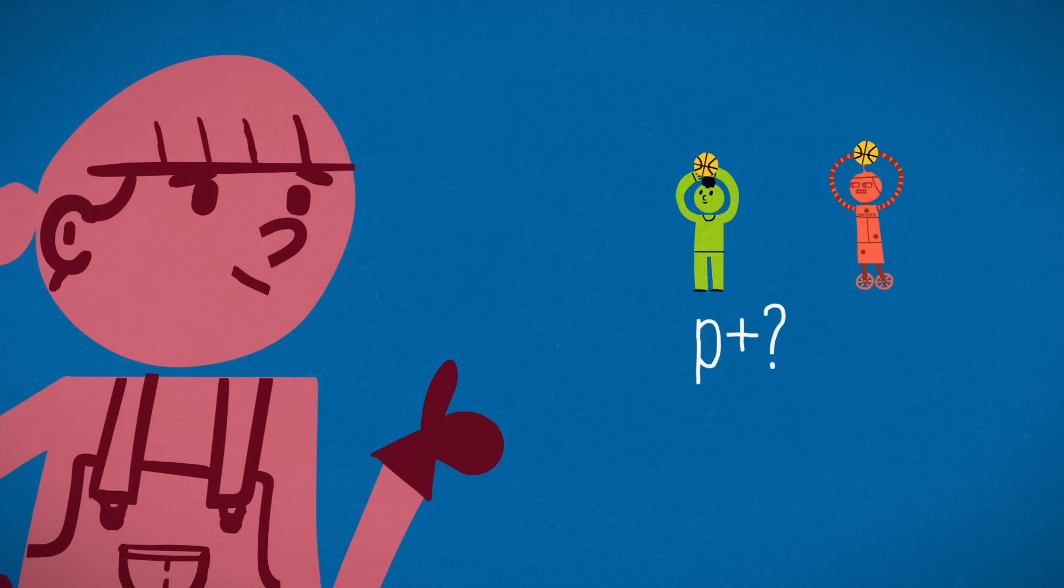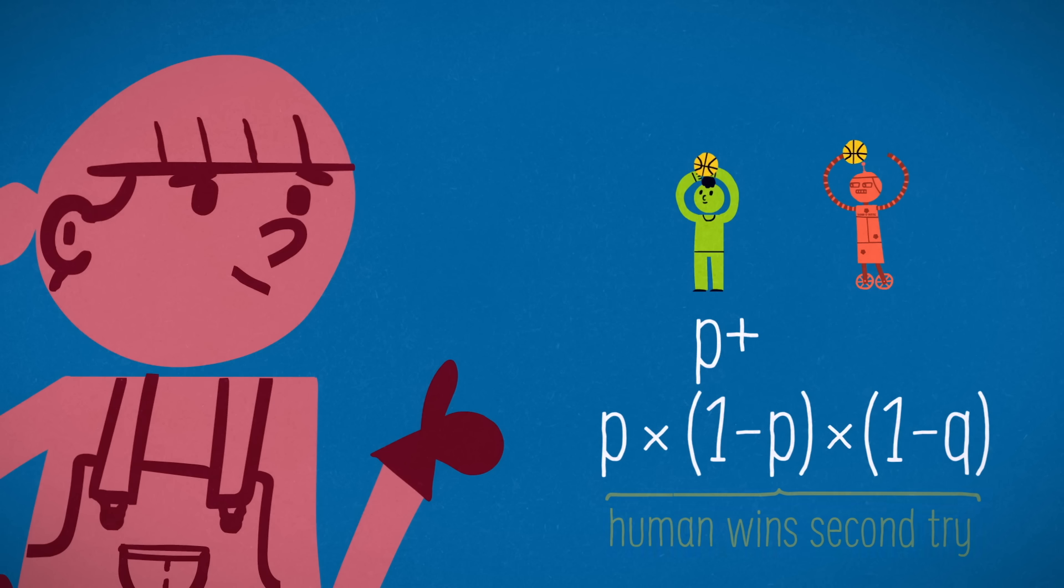What's the probability that they win on the second try? That attempt only happens if both players miss. The probability of a miss is 1 minus the probability of a success. So the miss probabilities are 1 minus P and 1 minus Q. The chance of both happening is the product of those values. So the probability of two failures and then a human success is P times 1 minus P times 1 minus Q.